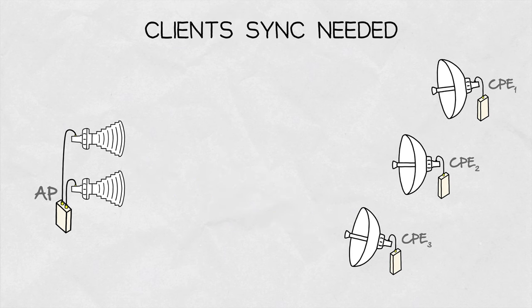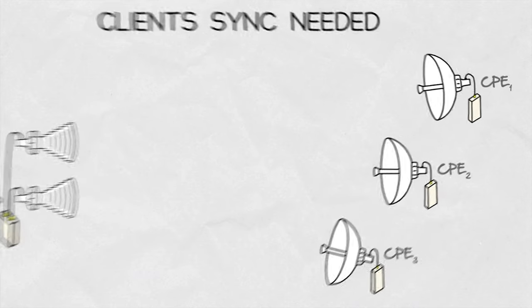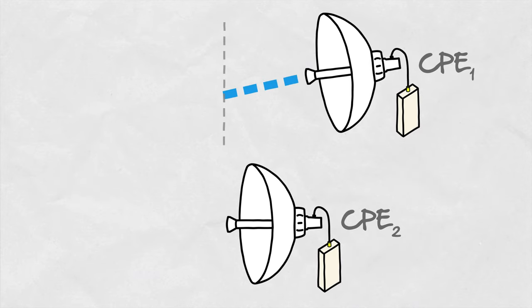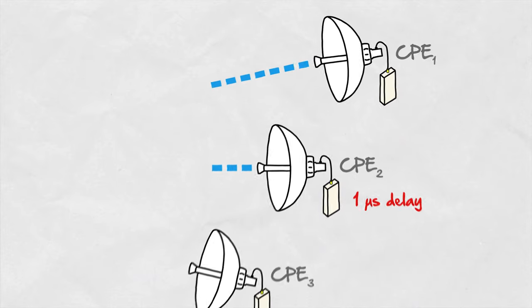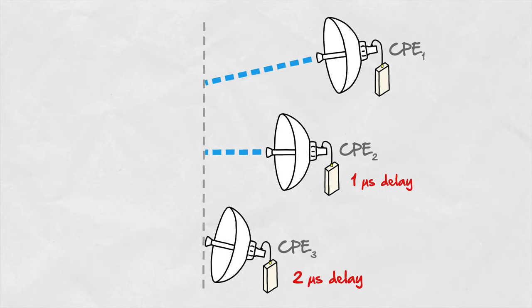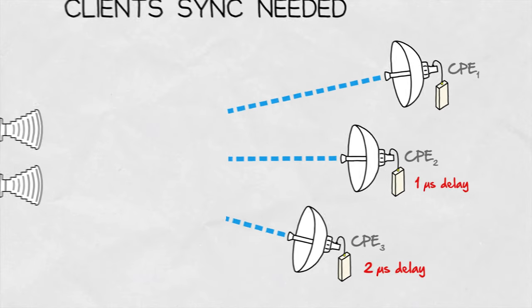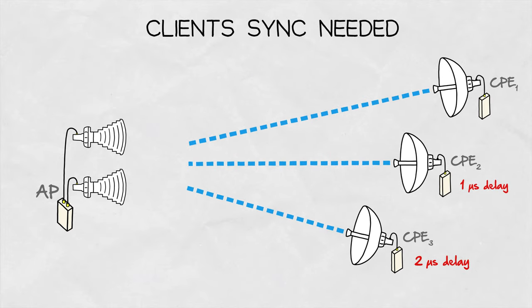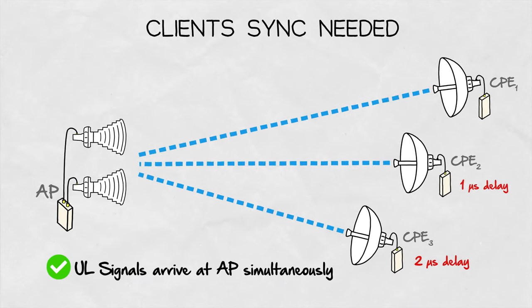Second, CPEs need to be synchronized for correct upload function. During the upload, the signals from all client stations must arrive at the access point at the same time. Since they are typically in different physical locations, the client stations need to know what delay to introduce such that the signals arrive at the access point simultaneously.